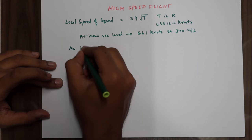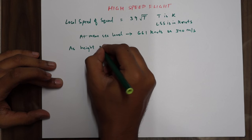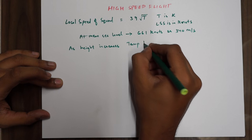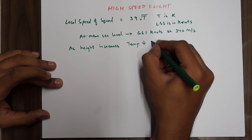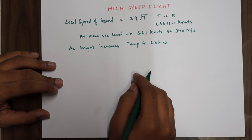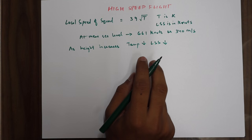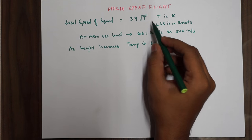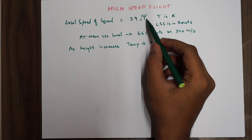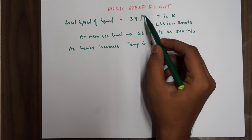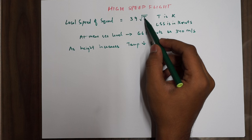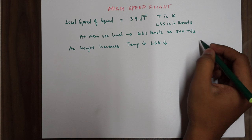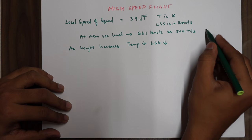At mean sea level, the speed of sound is given as 661 knots or 340 meters per second. As height increases, temperature decreases, so your LSS will also decrease. You should also know that crossing the tropopause into the stratosphere, where temperature is constant, the local speed of sound will be at a constant value.